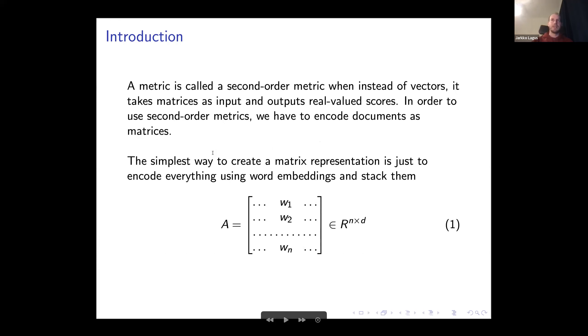The second-order metric is a metric where we use matrices instead of vectors. The metric is just a function that takes inputs as matrices and outputs real values. Since we have to somehow encode the documents as matrices, there are choices to be made. The simplest way would be to stack everything into one huge matrix, where we get N times D matrix, where N is the number of words or tokens, and D is the dimensionality for the word embeddings.